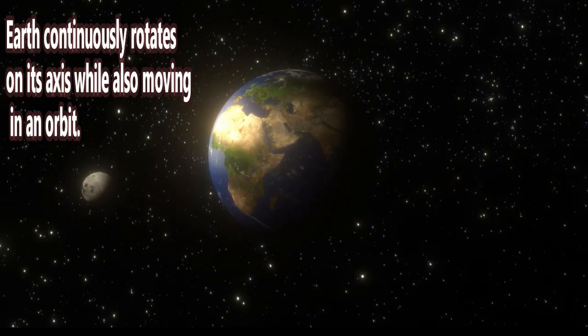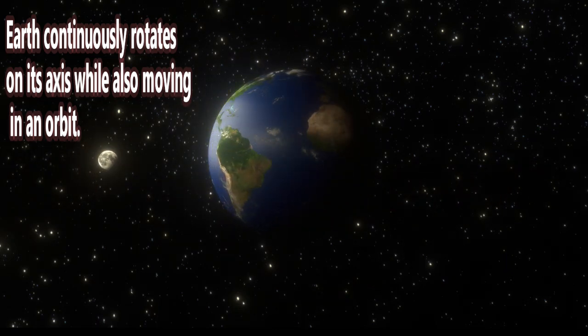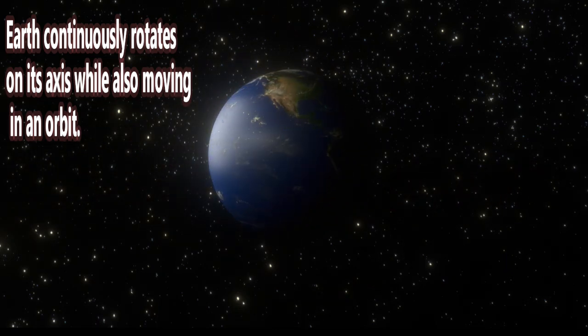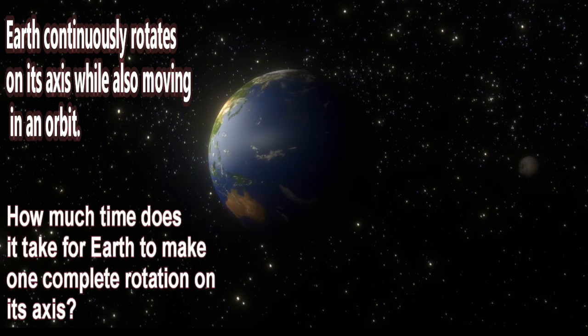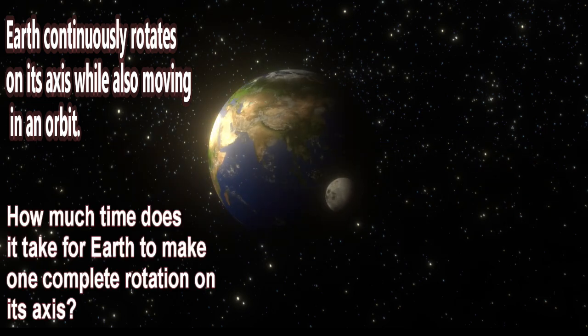Earth continuously rotates on its axis while also moving in an orbit. About how much time does it take for Earth to make one complete rotation on its axis?